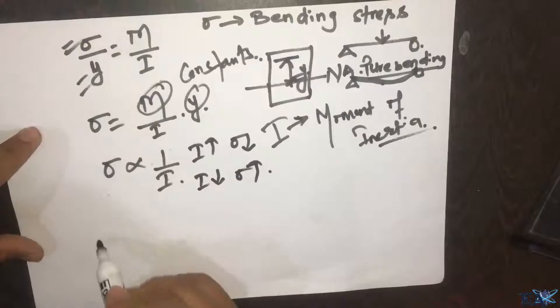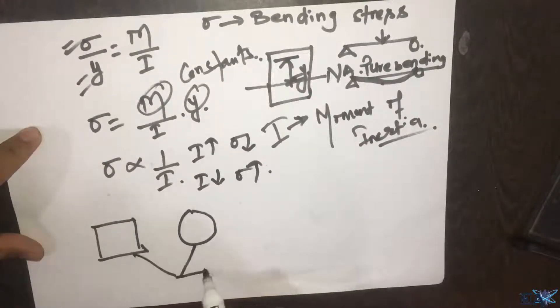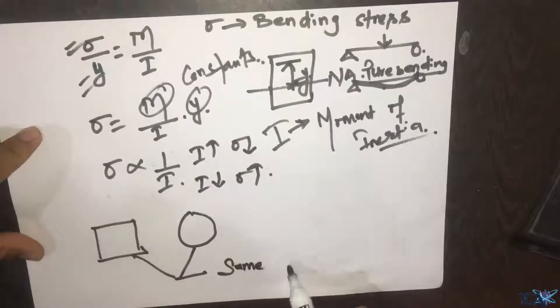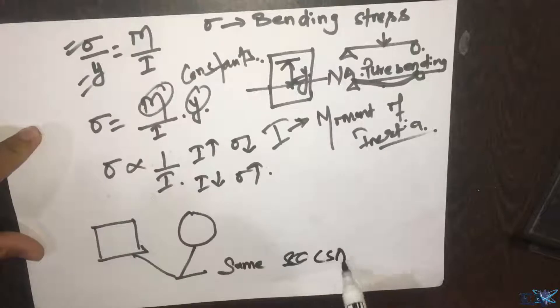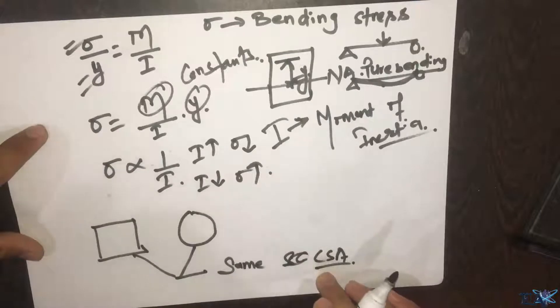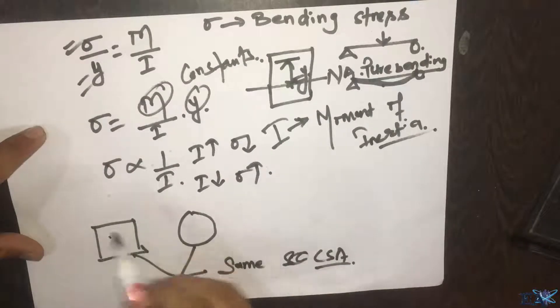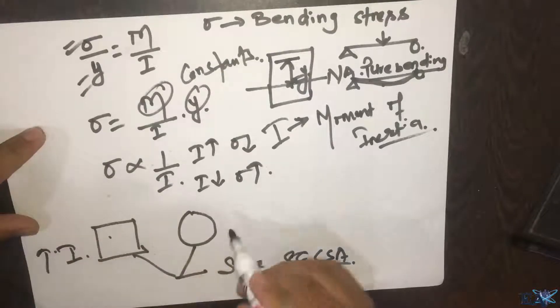If we take any rectangular section and a circular section, both having the same cross-sectional area (CSA), we find that the moment of inertia I is greater for the rectangular section as compared to the circular section.